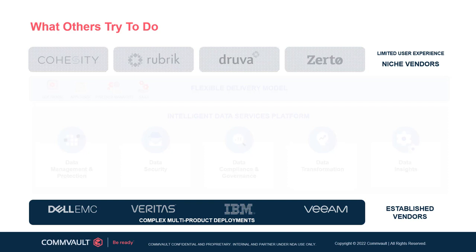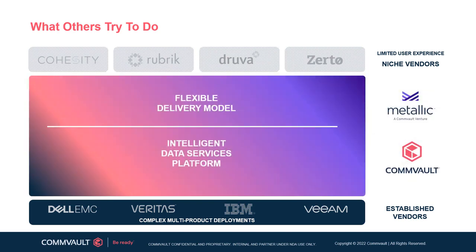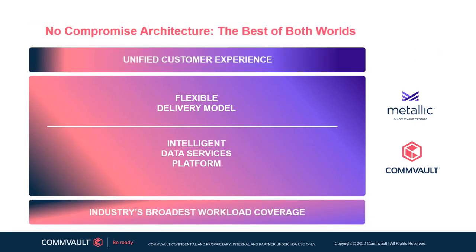Neither of the other vendor groups offers a comprehensive portfolio of intelligent data services like Commvault, which enables customers to easily expand their functionality without having to add complexity or cost. With these data services, Commvault brings the best of both worlds — a unified customer experience delivered across the industry's broadest workload coverage, eliminating fragmentation and reducing complexity. Today's businesses also require flexibility, and Commvault's flexible delivery model enables customers to consume and deploy these data services according to their business needs and preferences: Software, Appliance, SaaS, or a hybrid of these.